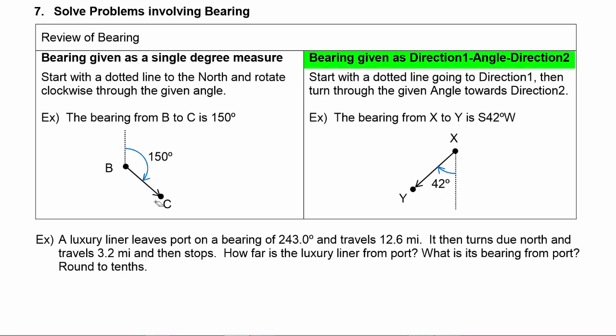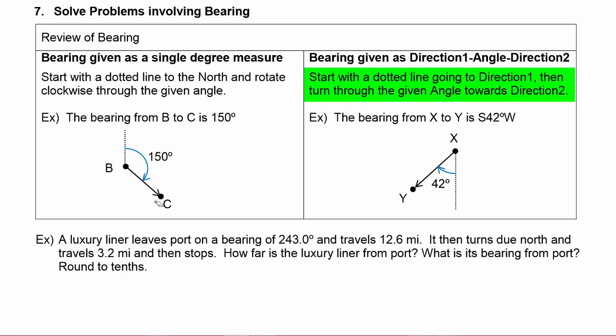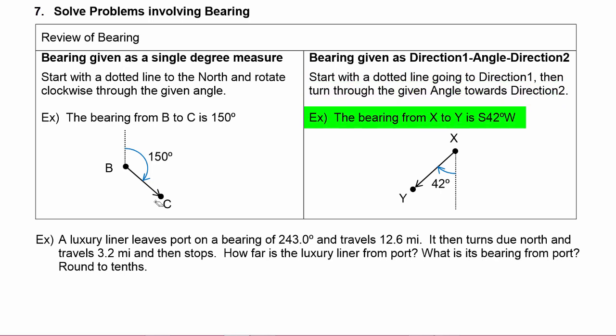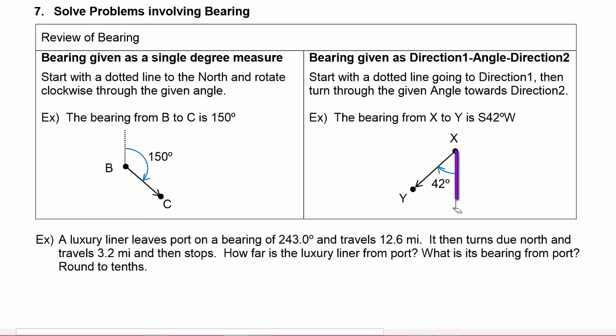The second type is when bearing is given as direction one, angle, direction two. You start with a dotted line going to direction one, then turn through the given angle towards direction two. For example, the bearing from X to Y is south 42 degrees west — starting from X, we draw a dotted line to the south, turn 42 degrees towards the west, and from X we draw the vector out to point Y.